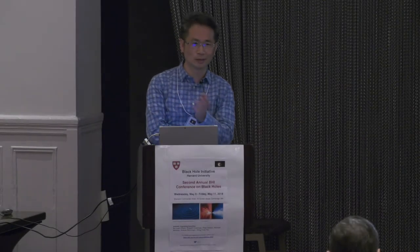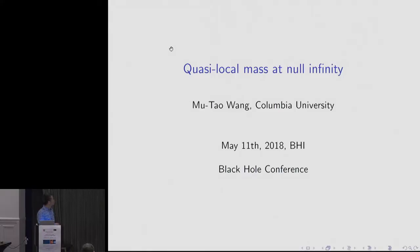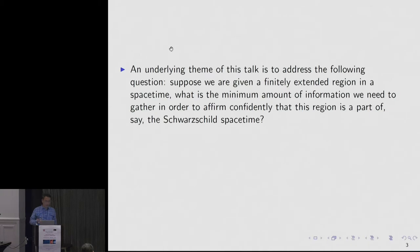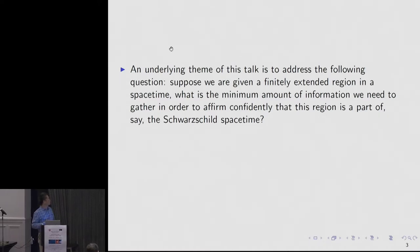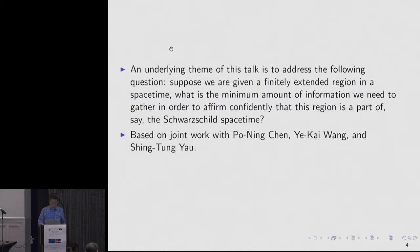It's a great pleasure to be here, thanks to the invitation of the organizers. Before I talk about the two topics in my title, and in order to make connection to the theme of this conference, I'd like to mention that an underlying theme of this talk is to address the following question: suppose we're given a finitely-extended region in a spacetime, and we ask, what is the minimum amount of information we need to gather in order to affirm confidently that this is a region in, for example, Schwarzschild spacetime, or some other general spacetime? This talk is based on joint work with Pauling Chen, Ye Kai Wang, and Xin Tong Yao.